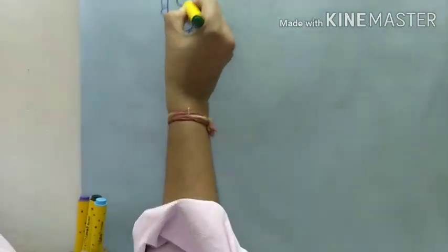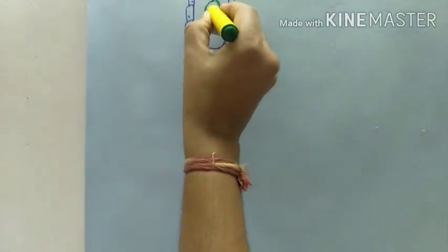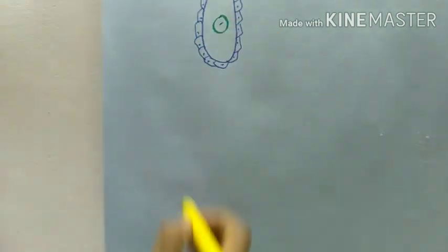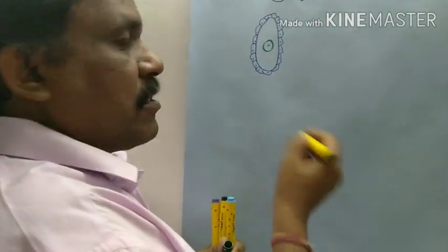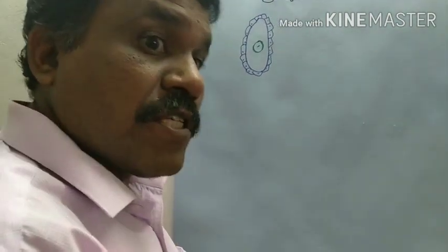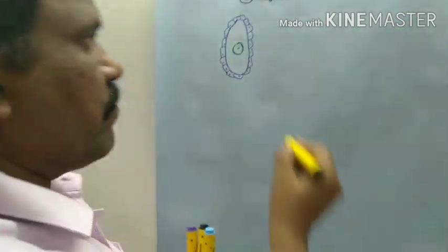Inside this nutritive tissue we have the sporogenous cells. It is also called as archesporial cell.